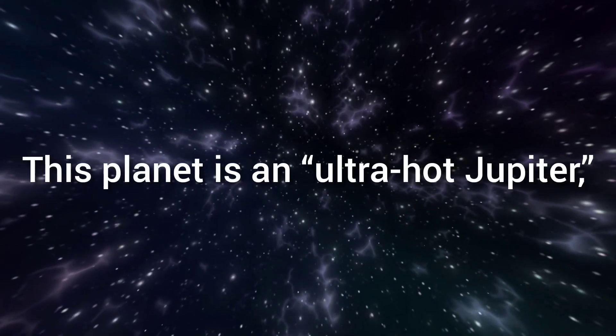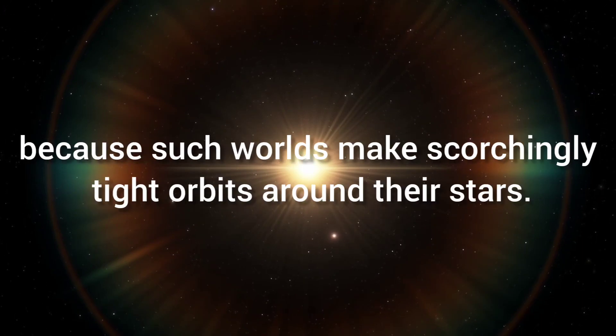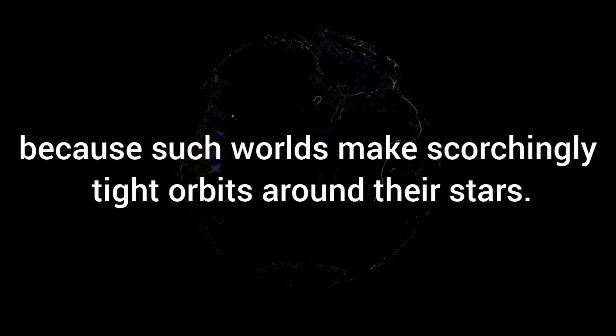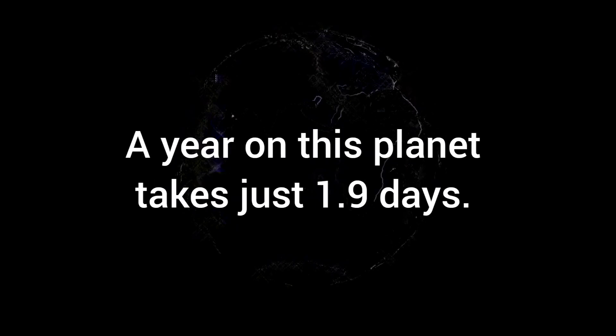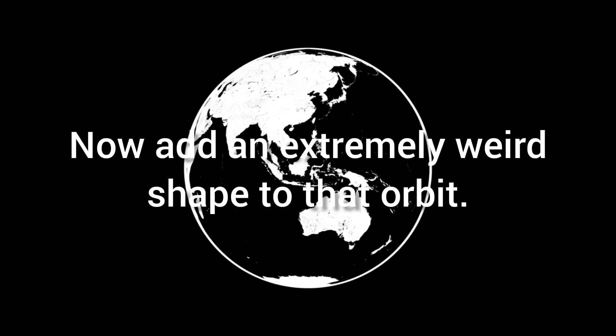This planet is an ultra-hot Jupiter, strange enough in its own right, because such worlds make scorchingly tight orbits around their stars. A year on this planet takes just 1.9 days. Now add an extremely weird shape to that orbit.